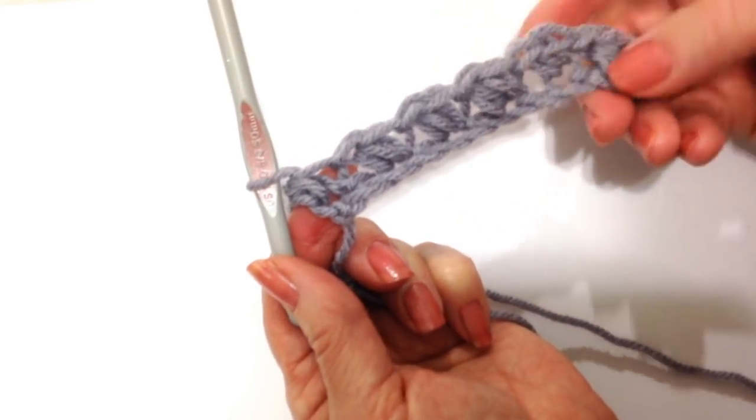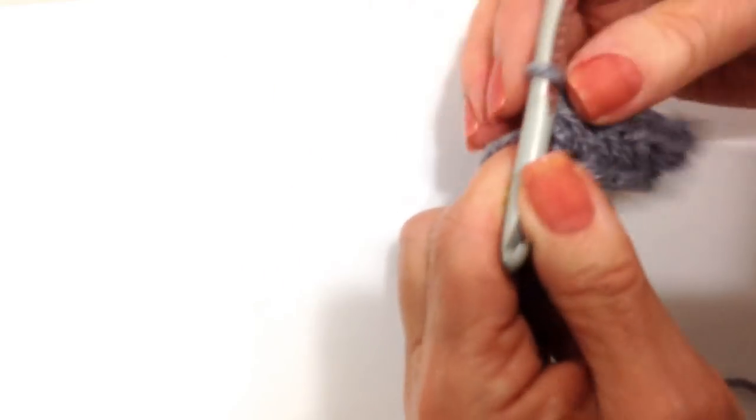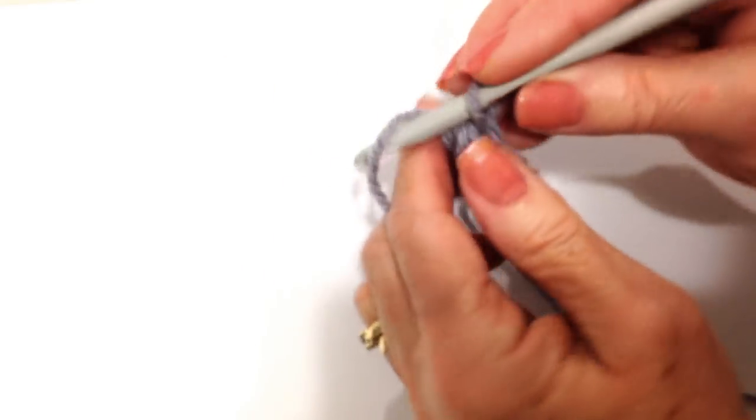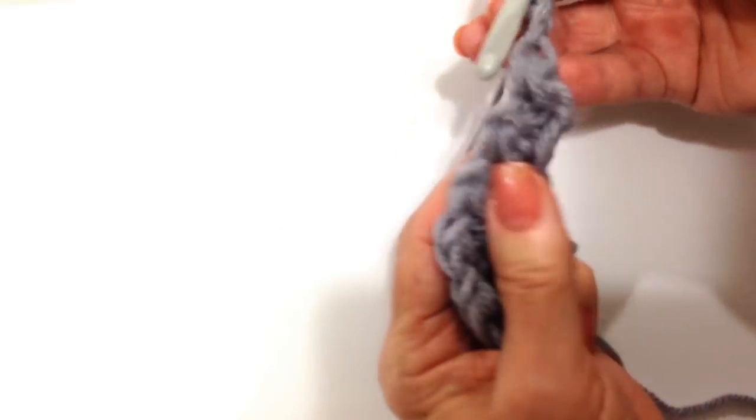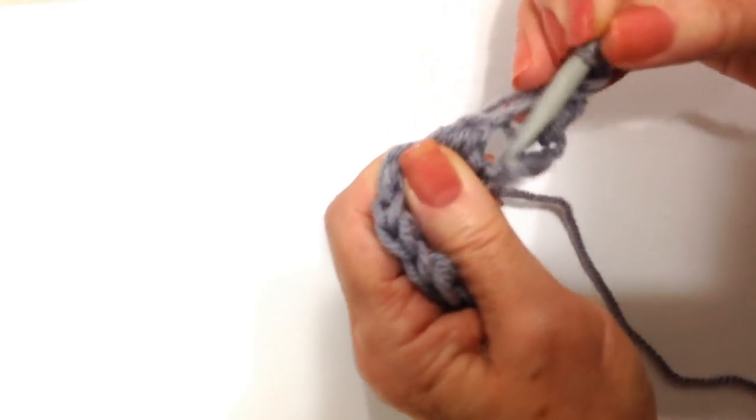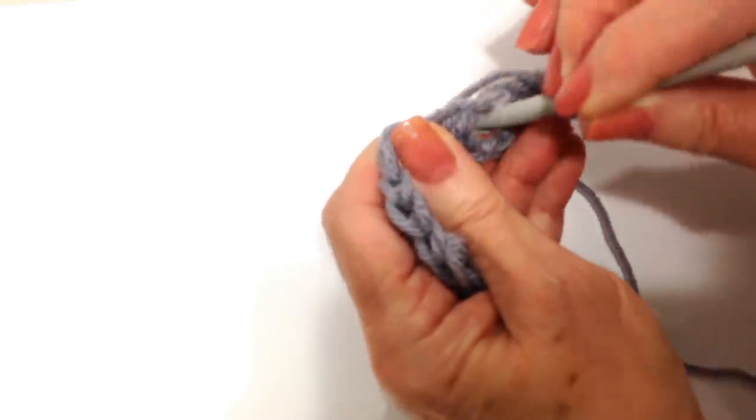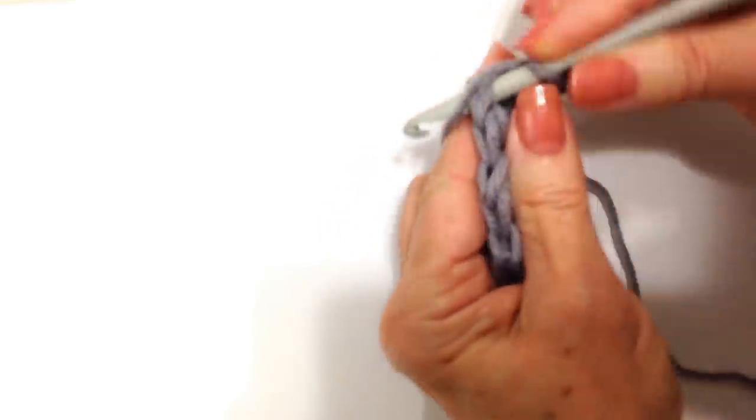And there's the first row of your Elizabeth stitch. Now every row is going to be exactly the same. It's going to be chain three, one, two, three, and turn.